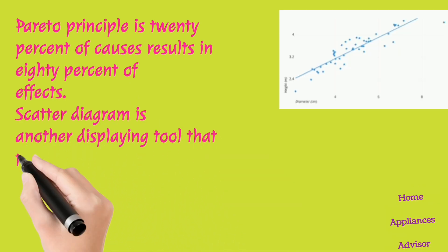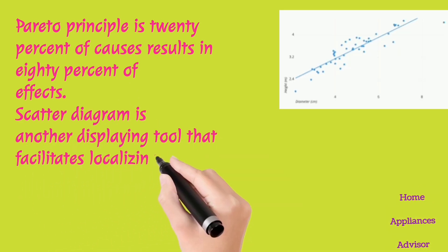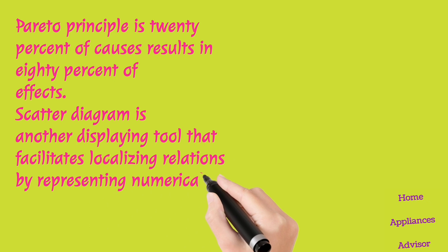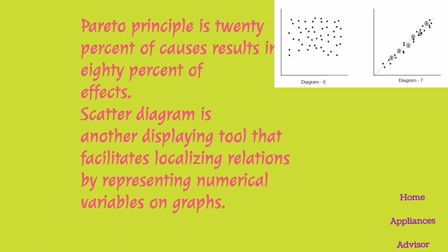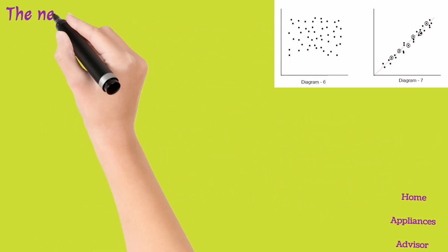The Scatter Diagram is another displaying tool that facilitates localizing relations by representing numerical variables on graphs.